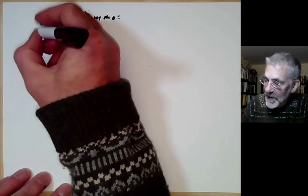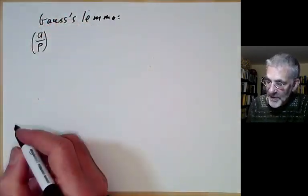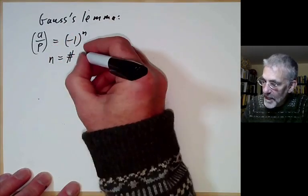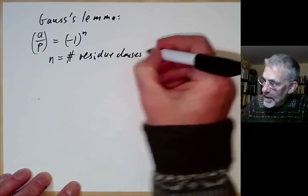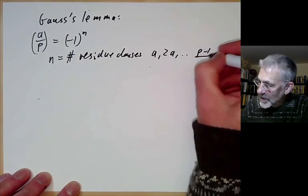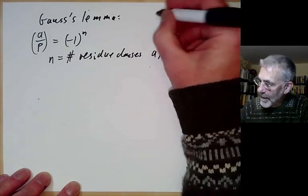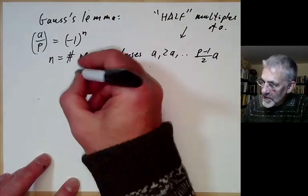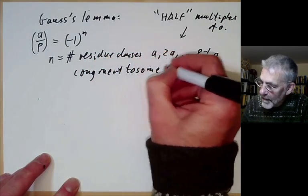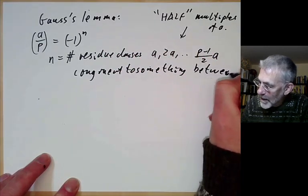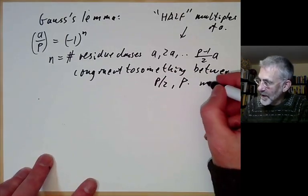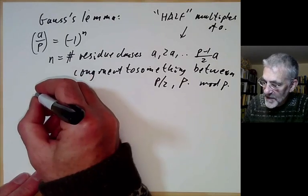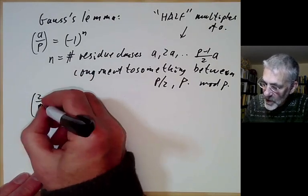In order to prove this, we're going to use Gauss's lemma. Gauss's lemma gives us a formula for the Legendre symbol (a/p): it equals (−1)^N, where N is the number of residue classes among a, 2a, 3a, …, ((p−1)/2)·a — the first half of all multiples of a — that are congruent to something between p/2 and p when reduced mod p.